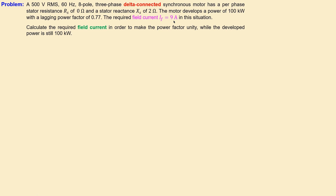What we would like to calculate is the new field current in order to make the power factor unity. So we would like to change the lagging power factor to a unity power factor. In order to do that, we will have the same developed power — we would like to keep the developed power but change the power factor to unity.